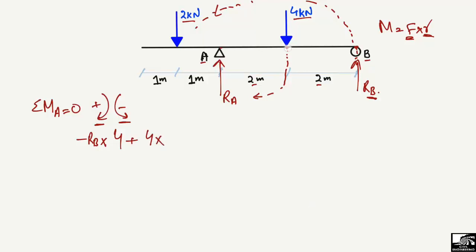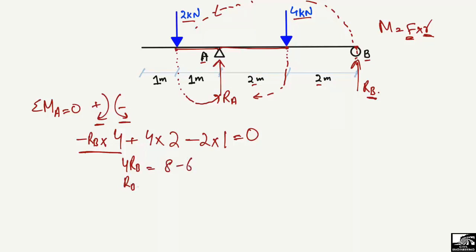The last force is the 2 kN load, which also creates an anti-clockwise moment about point A, so it is negative: minus 2 multiplied by its distance from A, which is 1 meter. The sum of all moments about point A equals zero. Shifting terms to the right side: 4RB equals 8 minus 2 — note the correction, it is 2 not 6 — so 4RB equals 6.